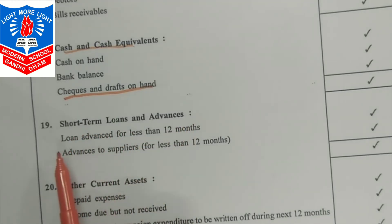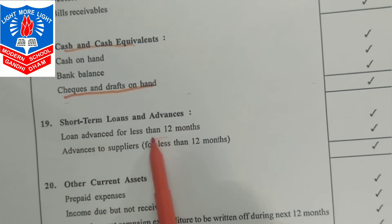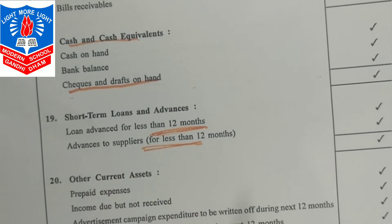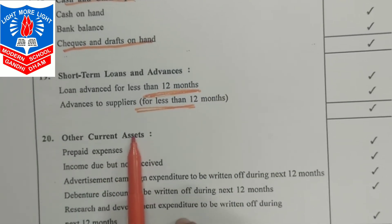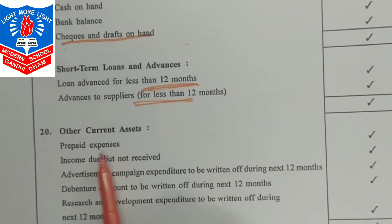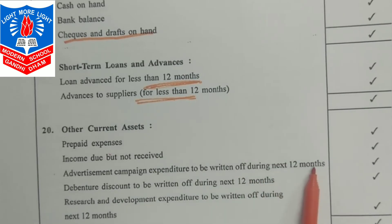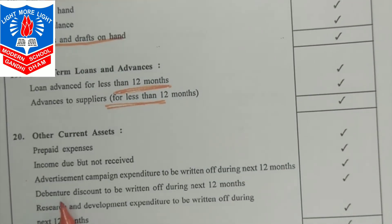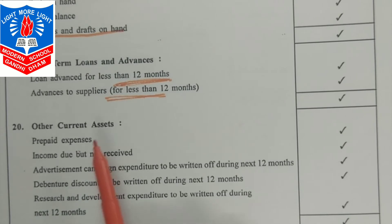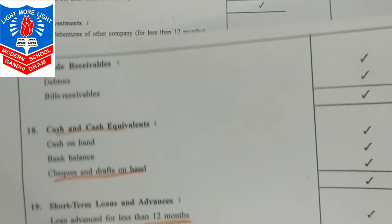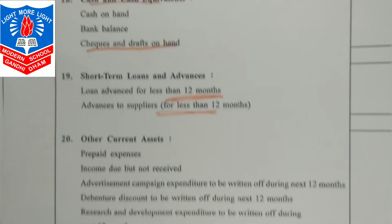Short-term loans and advances include loans advanced to any employee or supplier for less than 12 months. Other current assets include prepaid expenses, income due but not received, advertisement campaign costs within 12 months, debenture discount to be written off in next 12 months, and research and development to be written off in next 12 months. If more than 12 months, they go under other non-current assets.